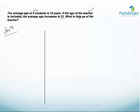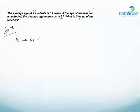That is 9 students and the teacher, making 10 people total. The average of these 10 people is 21 years. When we calculate the deviations, we will calculate the deviations from 21.